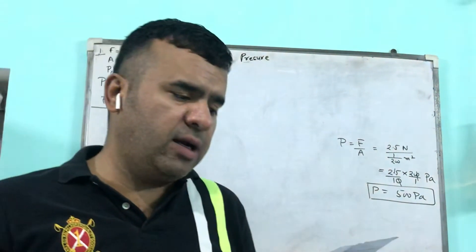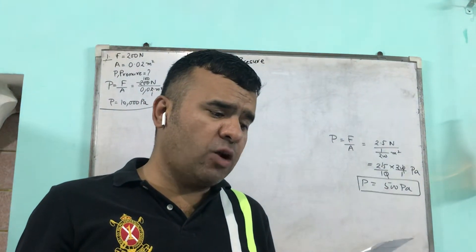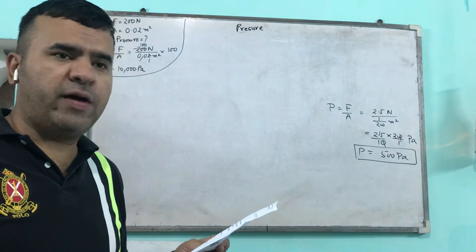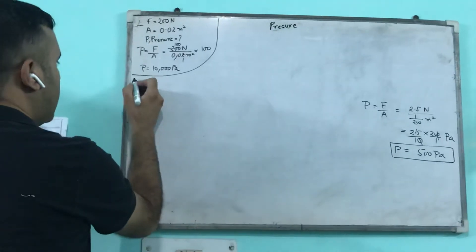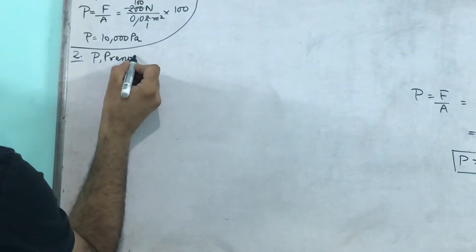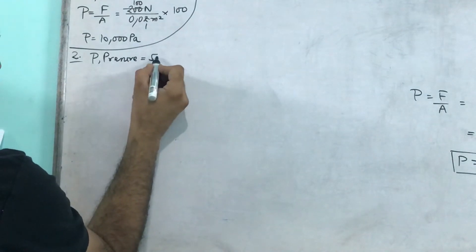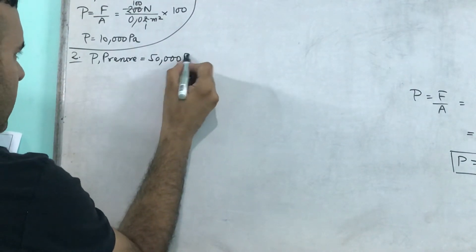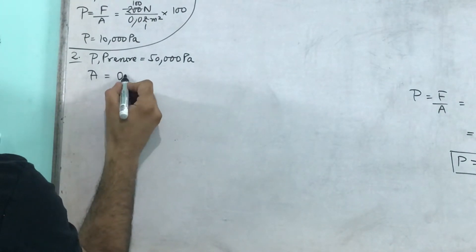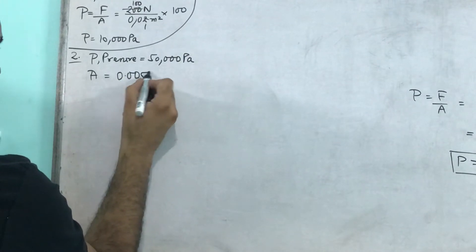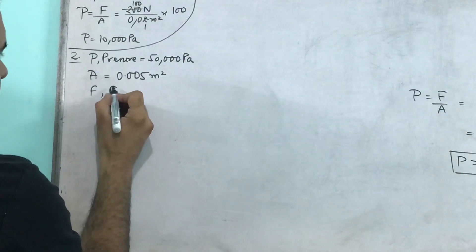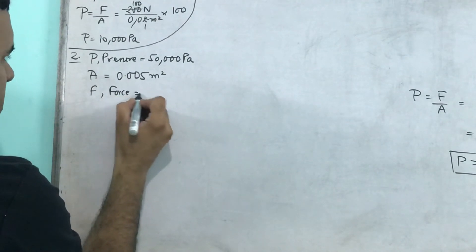The pressure of 50,000 Pascal on an area of 0.005 meters square. So dhyan de jay class, this time pressure is given, capital P, pressure given is 50,000 pascal. The area of cross section on which this pressure acts is 0.005 meters square. And this time our capital F, that is force, force is unknown.